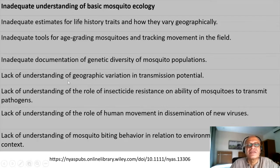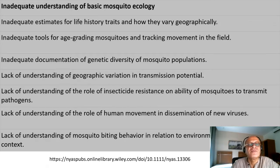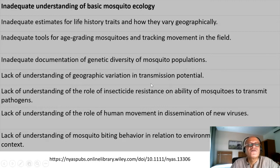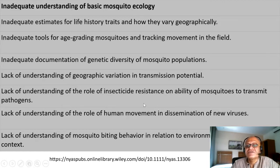For mosquitoes, tracking is not so easy — they can hitch a ride in an airplane all the way across the world, for example. There is inadequate documentation of genetic diversity of mosquito populations, a lack of understanding of geographic variation in transmission potential, and — as we will see in the case of Anopheles — a lack of understanding of the role of insecticide resistance on the ability of mosquitoes to transmit pathogens.